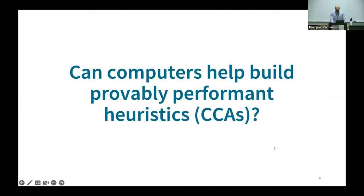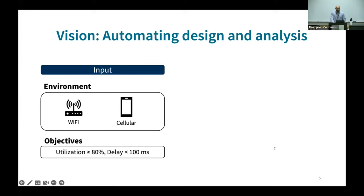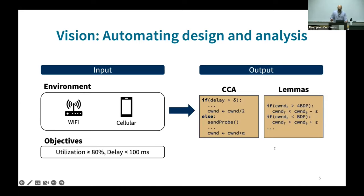And so we ask this natural question: can computers automatically consider all the subtle system behavior and help us in designing heuristics that are provably performant? We envision a system where the user has a way to describe what their network looks like and what objectives they want, and we get as output a CCA and lemmas that prove the algorithm meets its performance objectives. In this way, we alleviate the human from thinking about the corner cases where their system may break.